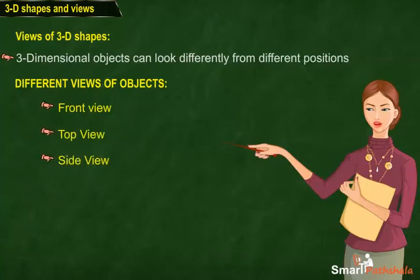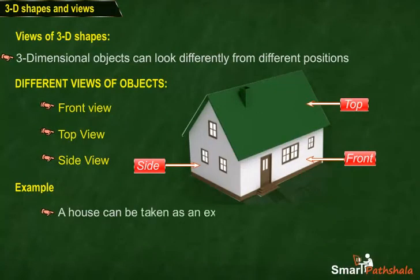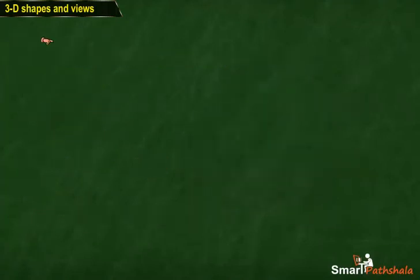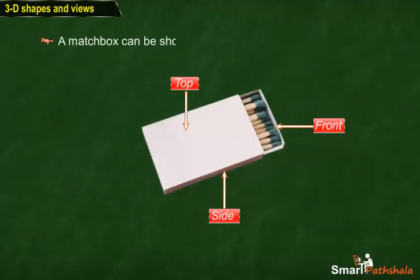We can also get different views of figures made by joining cubes. Example: A house can be taken as an example of a 3D object to show its different views. A matchbox can be shown as an example of a 3D object.